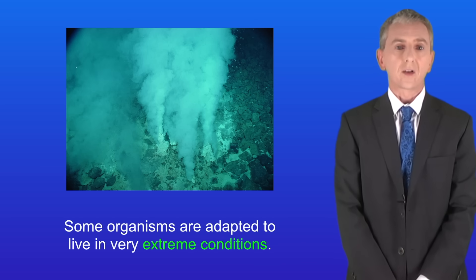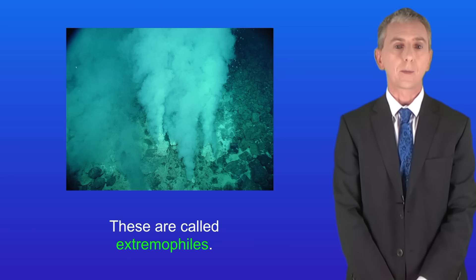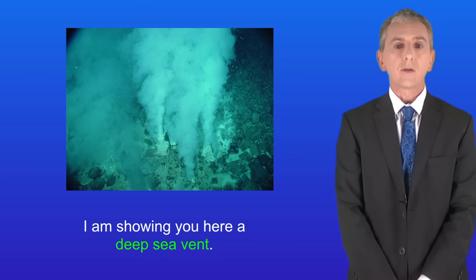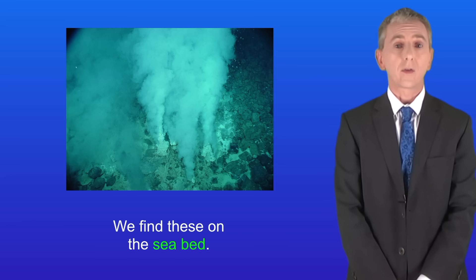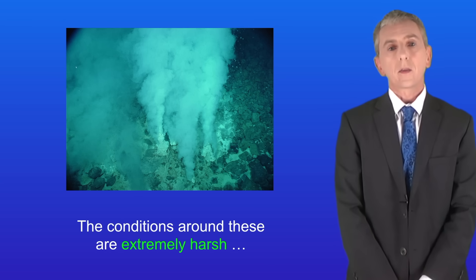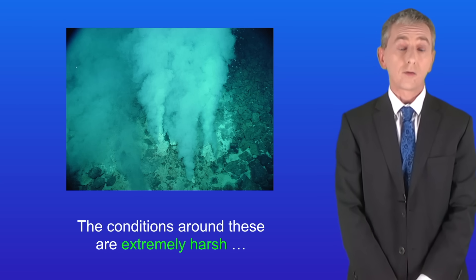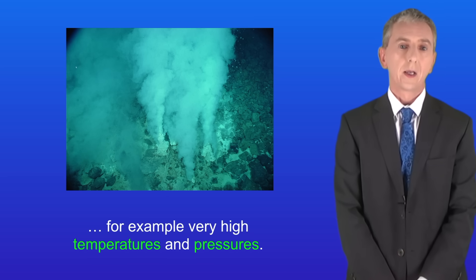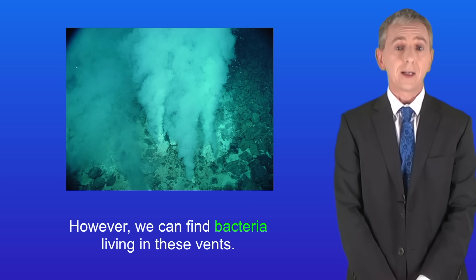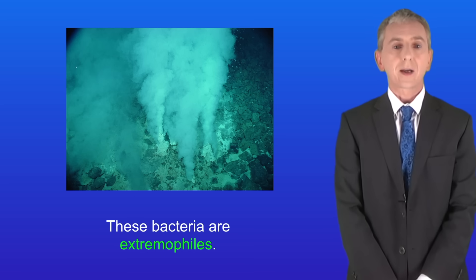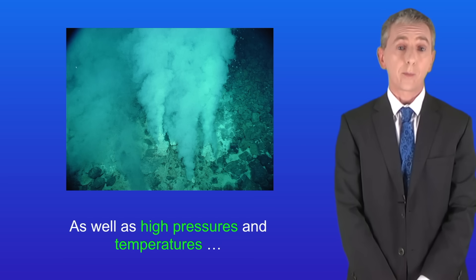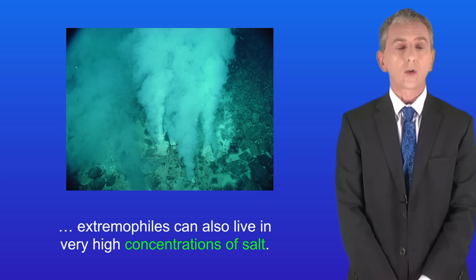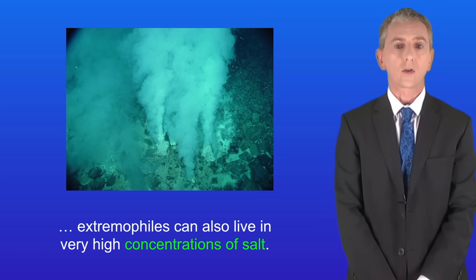Some organisms are adapted to live in very extreme conditions and these are called extremophiles. Deep sea vents found on the seabed have extremely harsh conditions, for example very high temperatures and pressures. However, we can find bacteria living in these vents, and these bacteria are extremophiles. As well as high pressures and temperatures, extremophiles can also live in very high concentrations of salt.